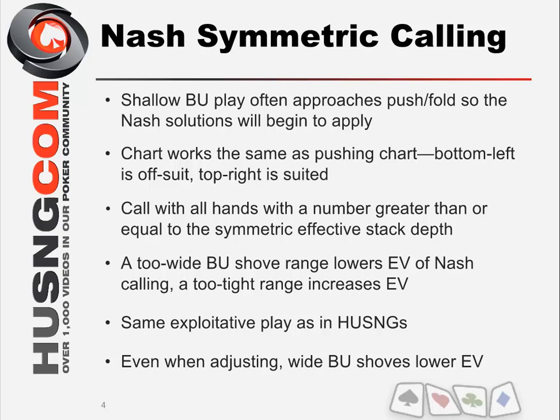You can start thinking about why: when the button shoves wider, the small blind benefits because he can call and make more money from those extra wide hands. When the button gets tighter, the small blind doesn't benefit — when the button folds, the small blind still has to play against the big blind and doesn't get to keep his blind. He has to play another push-fold game where his equity ends up somewhere around zero. When the button open-folds, it helps the big blind, because the small blind can then fold and the big blind gets to keep his big blind and win the small blind.